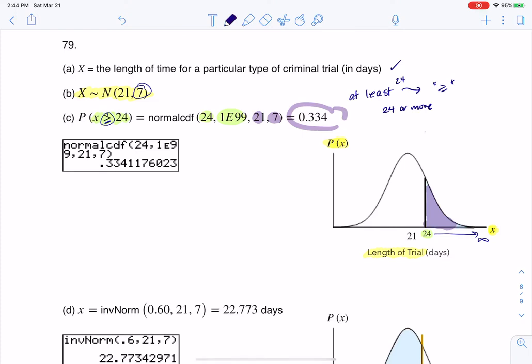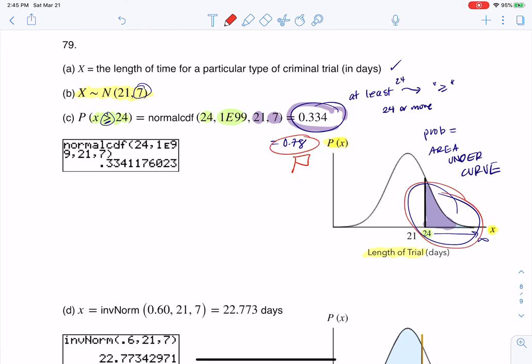So keep in mind, whenever we're talking about probability, that's always area under a curve. So the number that I get from my calculator output should match what I've shaded. And what I mean by that is if I had crunched this number and got something like 78%, it would have been a red flag. That's my best drawing of a flag because 78 doesn't match this graph.